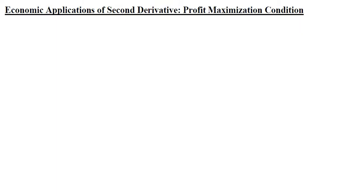Here we are going to see how the second order derivative can be used to make sense of the profit maximization condition of a firm.